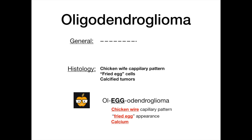The mnemonic is 'oligodendroglioma' — all of these buzzwords have something to do with eggs. The chicken wire capillary pattern: chickens lay eggs. The fried egg appearance is a no-brainer. And you get your calcium from eating eggs — hence calcified tumors. So just remember 'oligodendroglioma' and think eggs. That's all you need to know for oligodendroglioma.